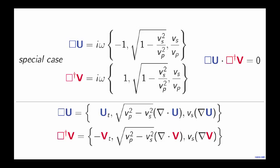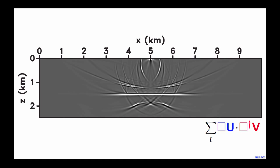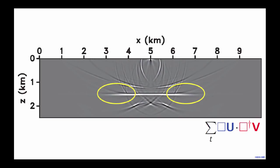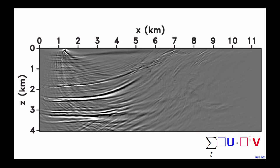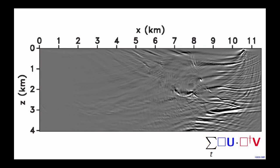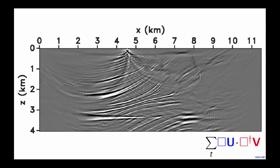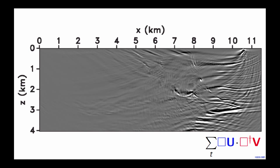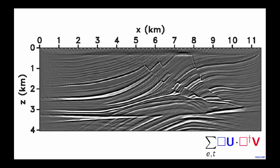Let me show how the image looks when applying the image condition with this modification. We have no polarity reversal at normal incidence, and no more backscattering artifacts. Showing this for the more complex Marmousi model over a couple of shots, and stacking over shots, we obtain the images shown at the beginning of this presentation — which have no backscattering artifacts and no polarity reversal.